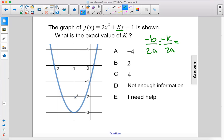And in this case, the axis of symmetry is at negative 1, so we can set that equal to negative 1. And we also know that a is 2, so that gives us negative k over 2 times 2 equals negative 1.